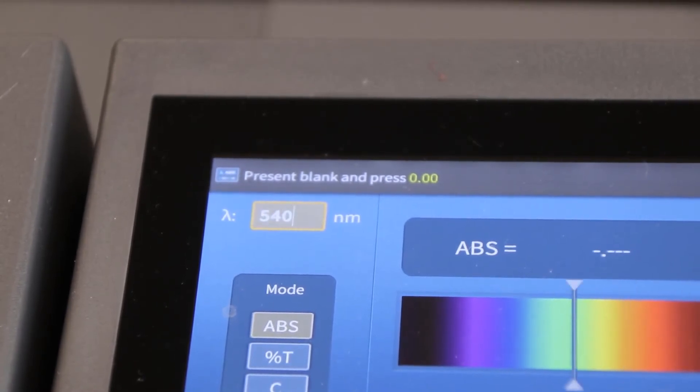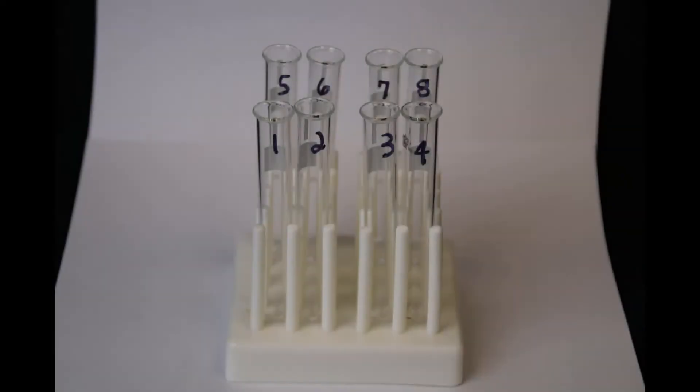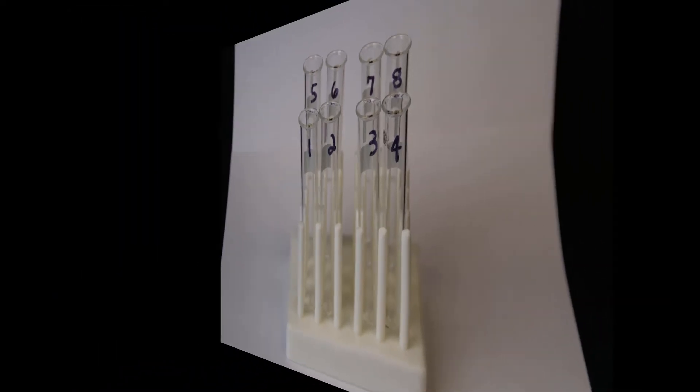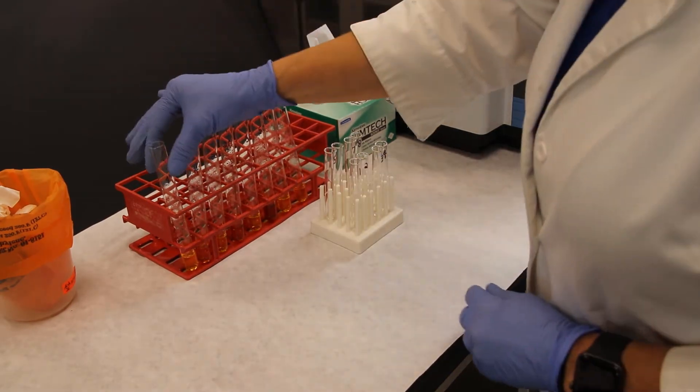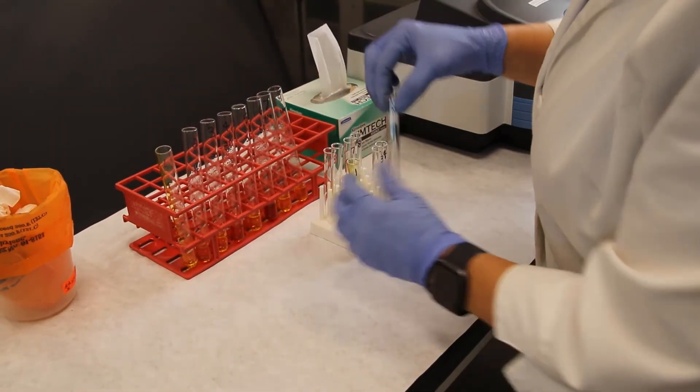We will be using glass cuvettes for our analysis. When you are in the lab you will label your cuvettes 1 and 2. Again for this video we will label them 1 to 8 to prevent confusion. Transfer the contents of the test tubes into their respectively labeled cuvettes.